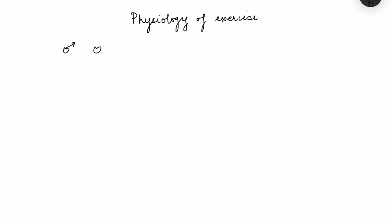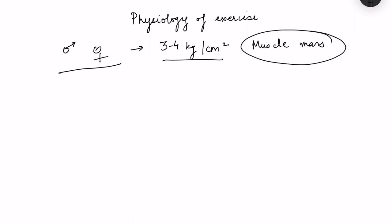The muscle in the case of a male and a female can produce the same maximal force of contraction, equivalent to 3 to 4 kg per centimeter square. So the basic difference between male and female depends on the muscle mass — how much muscle is present — rather than the maximal force which can be generated. Because females have less muscle mass, the maximal strength generated is less, due to hormonal differences.